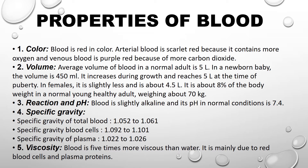Arterial blood is scarlet red in color because it contains more oxygen, and venous blood is purple-red because of carbon dioxide. Blood volume is approximately 4.5 liters in females and slightly more in males, about 8% of body weight in a normal young healthy adult weighing about 70 kg.